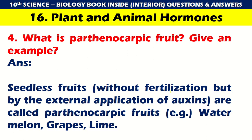What is parthenocarpic fruit? Give an example. Seedless fruits produced without fertilization but by the external application of auxins are called parthenocarpic fruits. Examples are watermelon, grapes and lime.